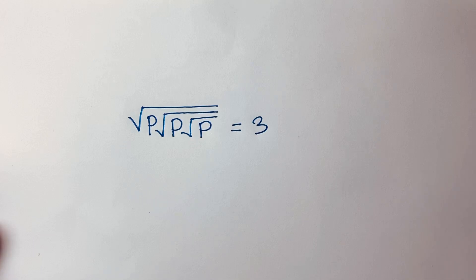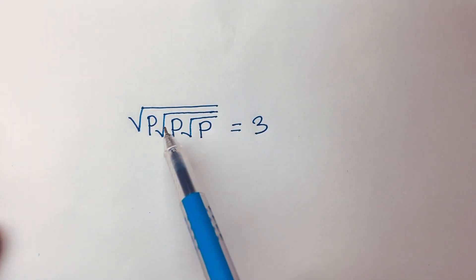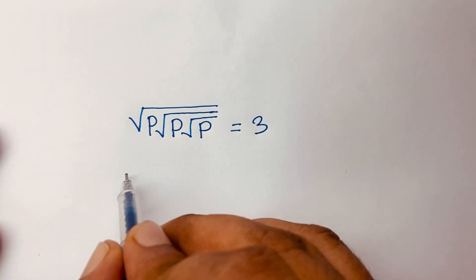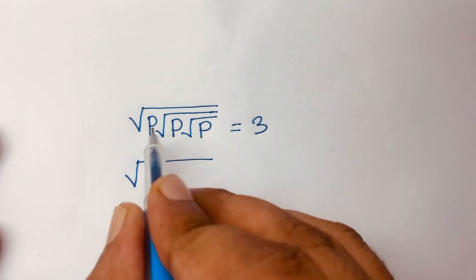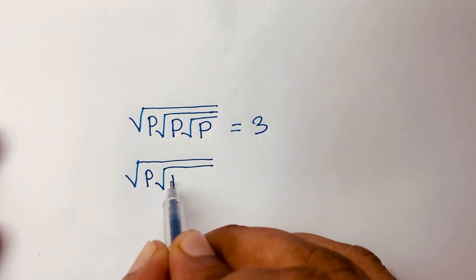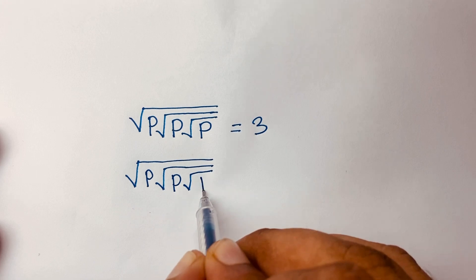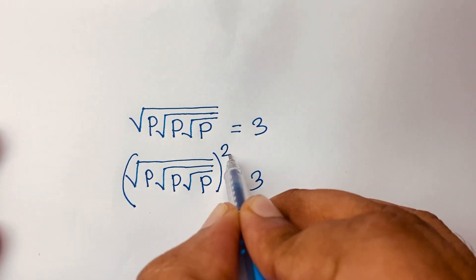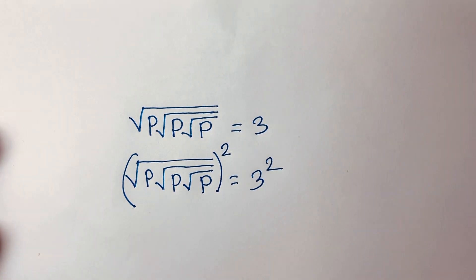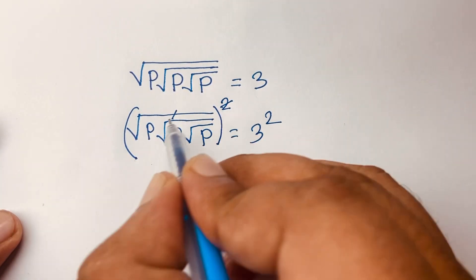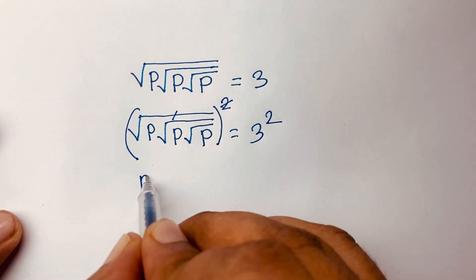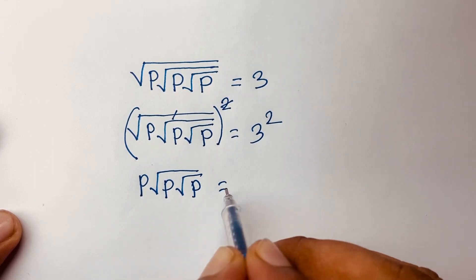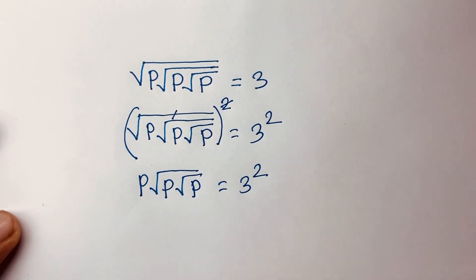To solve this radical math question: square root p times square root p times square root p is equal to 3. First, I square both sides — the square root cancels — so we find p times square root p times square root p is equal to 3 squared.